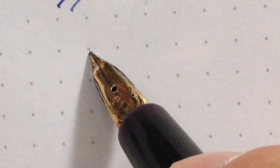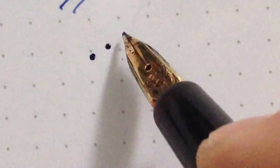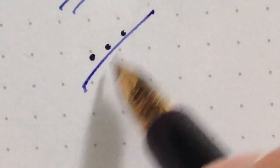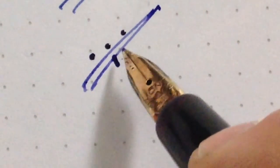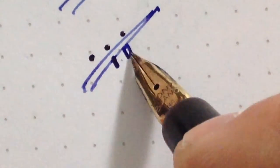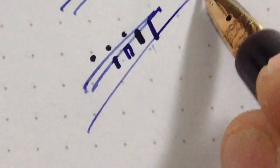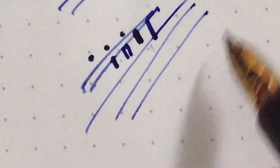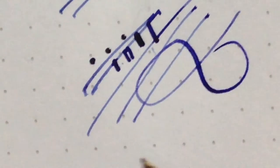Now, let's see how this pen reacts to the writing hand without pressure. With pressure. This is a semi-flex nib.